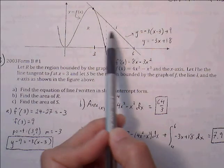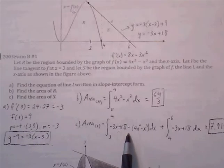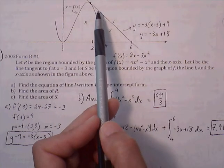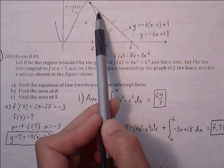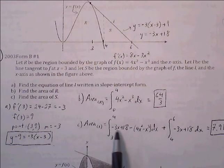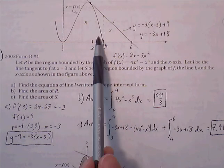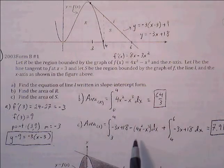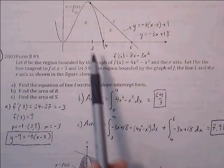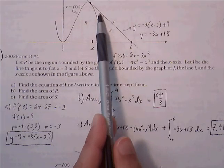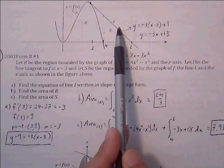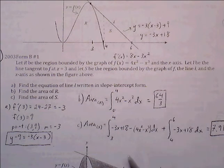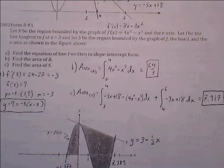Top minus bottom for the left region and top minus bottom for the right region. For the left region, from 3 to 4: the tangent line equation (negative 3x plus 18) minus the curve (4x squared minus x cubed). Then from 4 to 6, the triangular region: (negative 3x plus 18) minus 0. This gives us approximately 7.917.